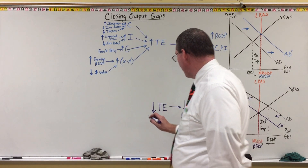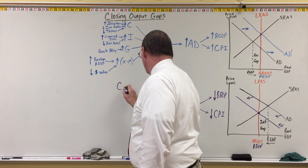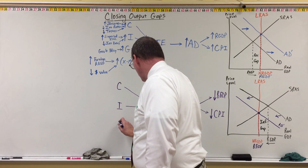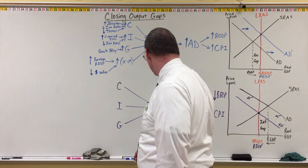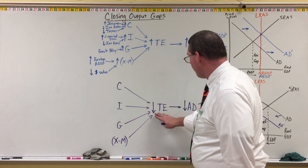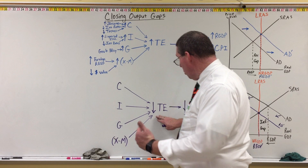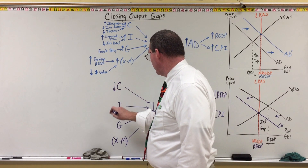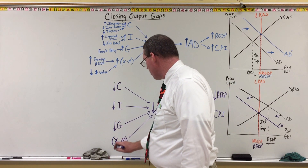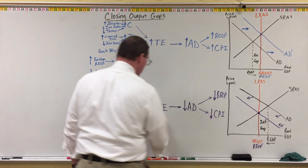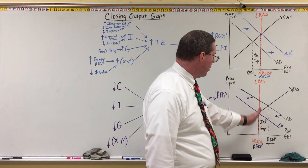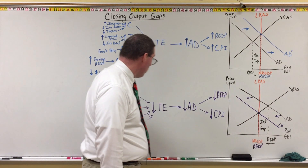What affects total expenditure? Consumption, investment, government spending, and net exports. For total expenditure to go down, any one of these four components must decrease. A decrease in consumption, investment, government spending, or net exports will lower total expenditure, lower aggregate demand, lower real GDP, close the inflationary gap, and bring us back into long-run equilibrium.